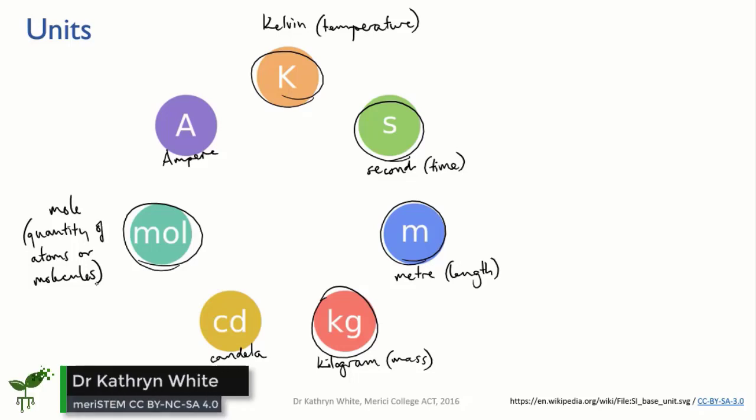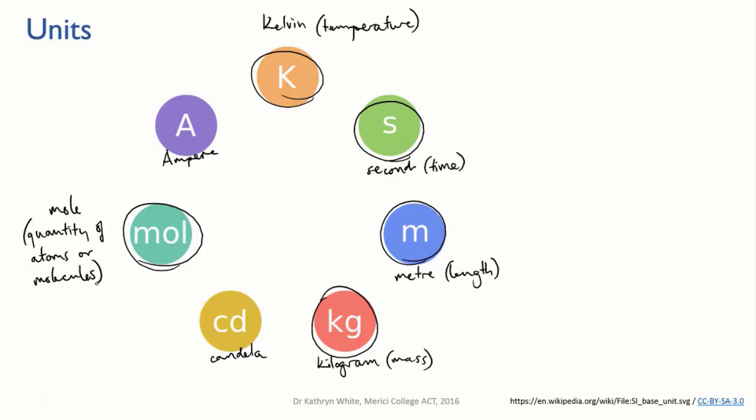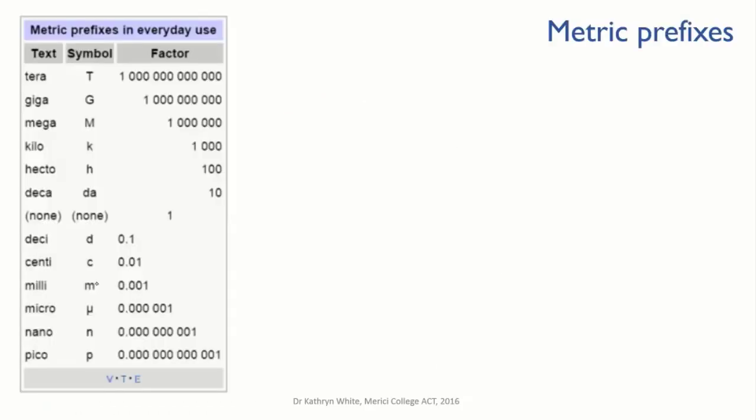Of course, it's not enough simply to have kilograms, meters, and seconds. Sometimes we want to measure things that are very light, or very long, or very fast. So then we change the size of the unit by adding a prefix.